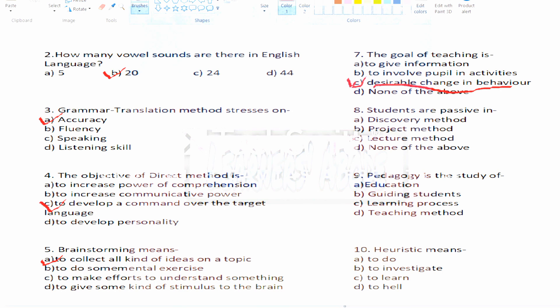Question number nine: pedagogy is the study of — Option A: education, Option B: guiding students, Option C: learning process, Option D: teaching method. The right answer is Option D, teaching method. Question number ten: heuristic means — Option A: to do, Option B: to investigate, Option C: to learn, Option D: to say something. The right answer is Option B, to investigate.